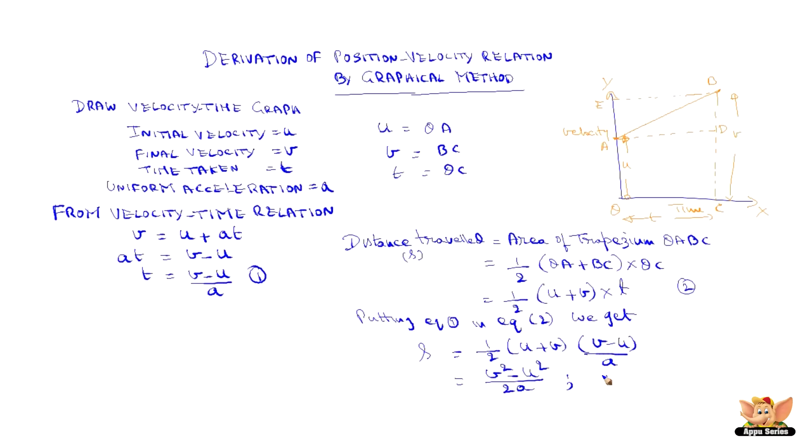In other words, the position velocity relationship is 2as is equal to v square minus u square. This is called third equation of motion. So v square minus u square is equal to 2as is called third equation of motion.